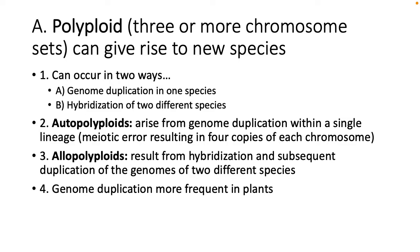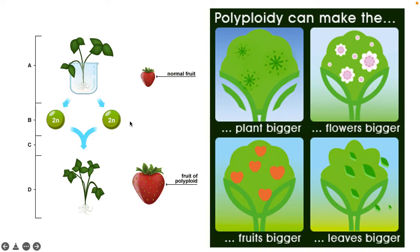Allo-polyploidy results from hybridization and subsequent duplication of the genomes of two different species — egg of one species and pollen of another meet and fuse, resulting in duplicated genomes. Genome duplication is far more frequent in plants than in animals. We have encountered polyploid organisms in the supermarket because polyploidy can make a plant bigger, or the flowers, fruits, or leaves bigger. Those large strawberries you see in the supermarket are polyploid, but wild strawberries are really small.